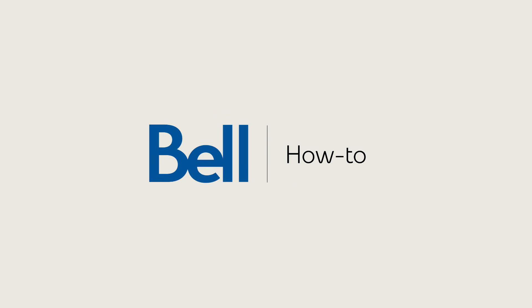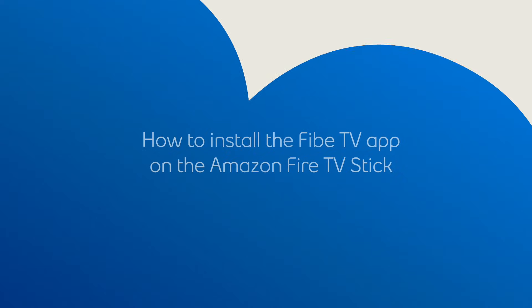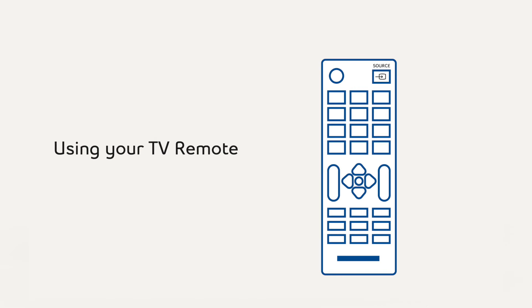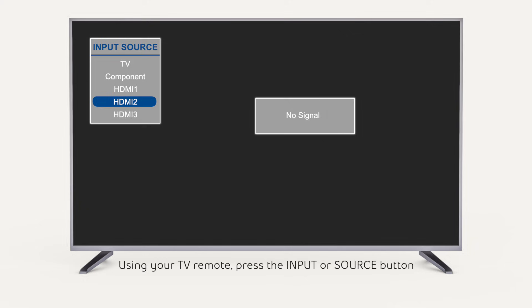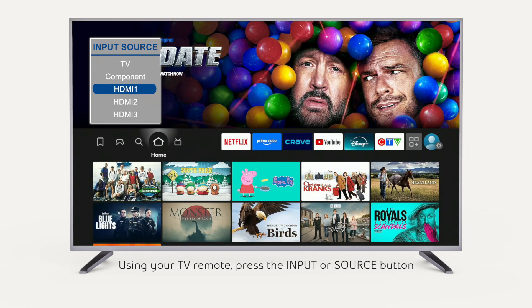In this video, we show how to install the Bell Fibe TV app on the Amazon Fire TV stick. Make sure your TV is set to the correct input. If you don't see the Fire TV home screen, using your television remote, press the input or source button. Use it to select the correct HDMI input and you're ready to begin.